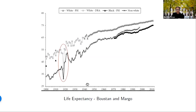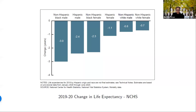According to Bustan and Margo, the most rapid improvements in Black life expectancy occurred between 1940 and 1960, corresponding to a period of rising real incomes and racial convergence in both income and educational attainment. Although Black and white life expectancies have gradually converged over time, there have been periods of stagnation and even reversal. Indeed, the COVID-19 pandemic has erased at least 15 years' worth of progress closing the Black-white life expectancy gap.